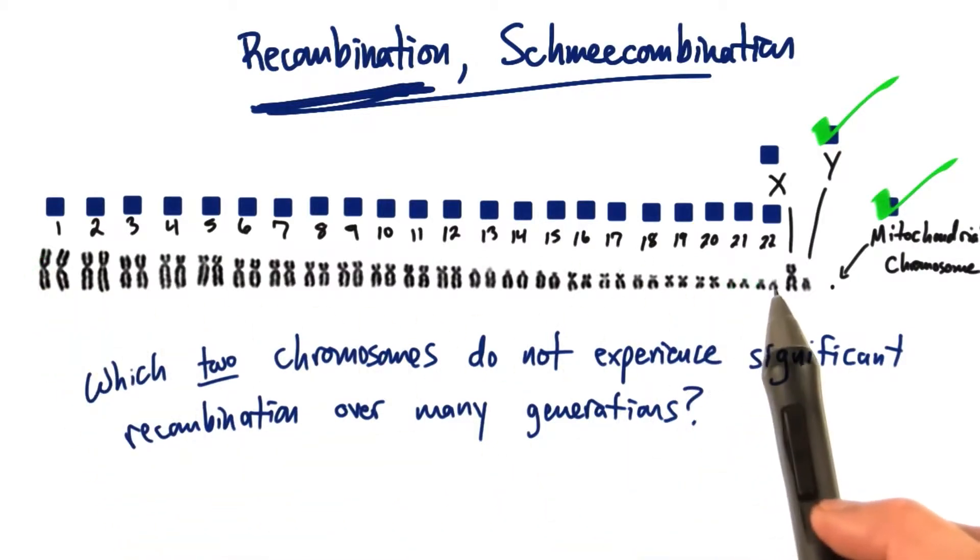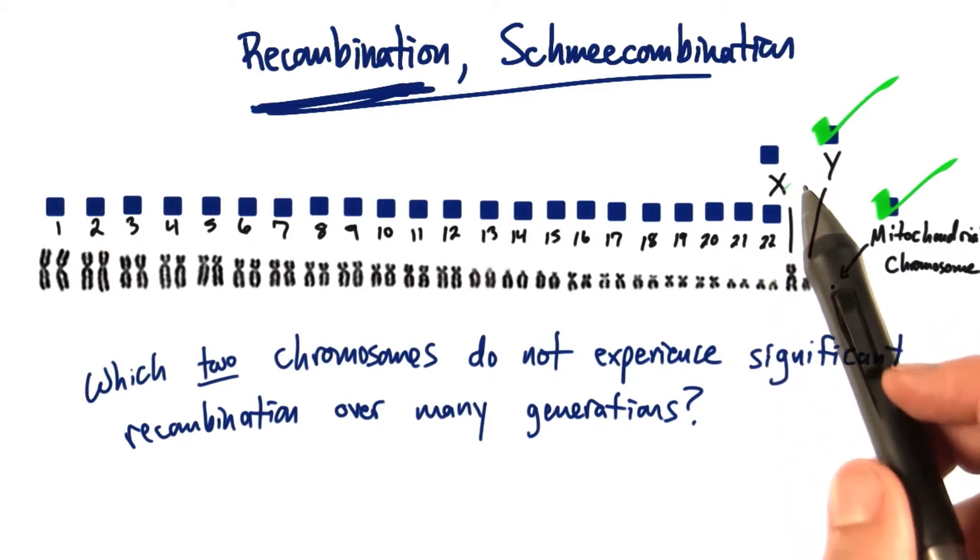Obviously, we know that chromosomes 1 through 22 do, the autosomes. And even the X chromosome does.